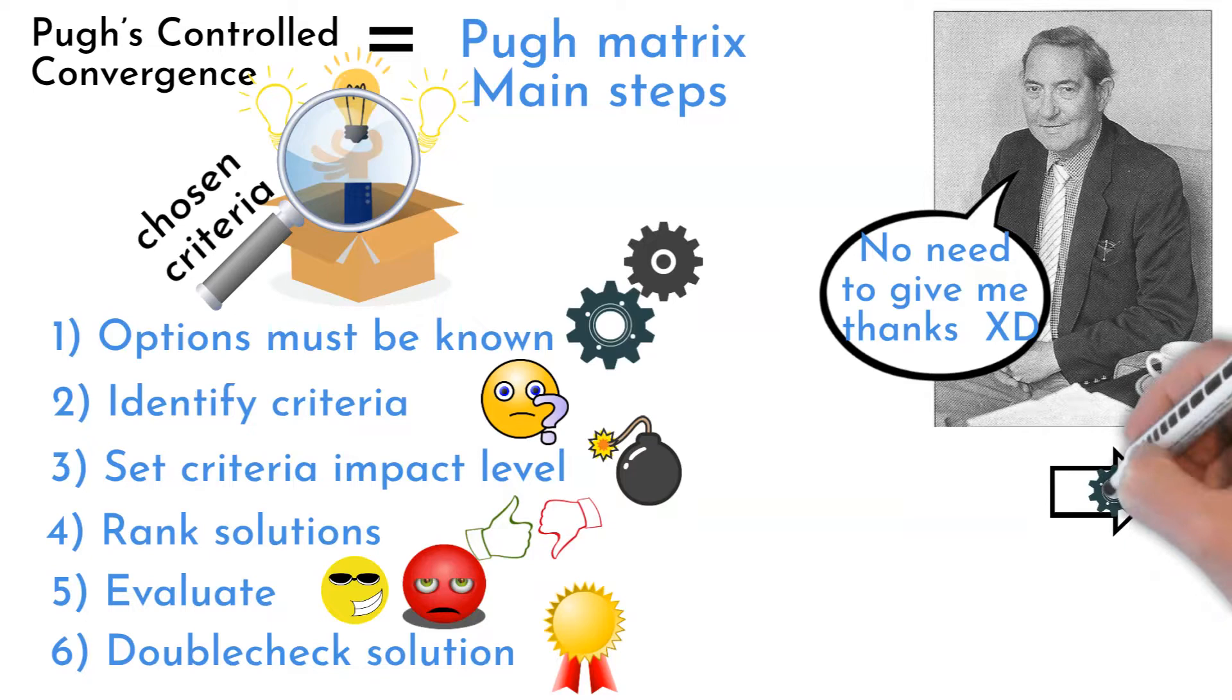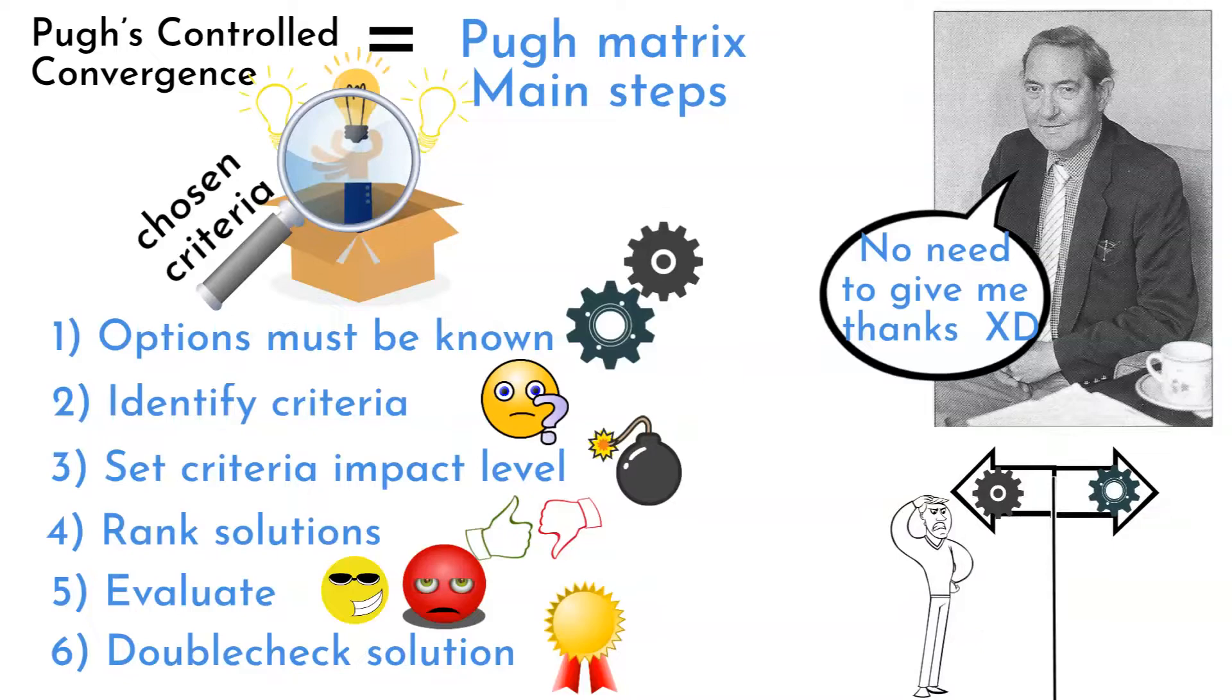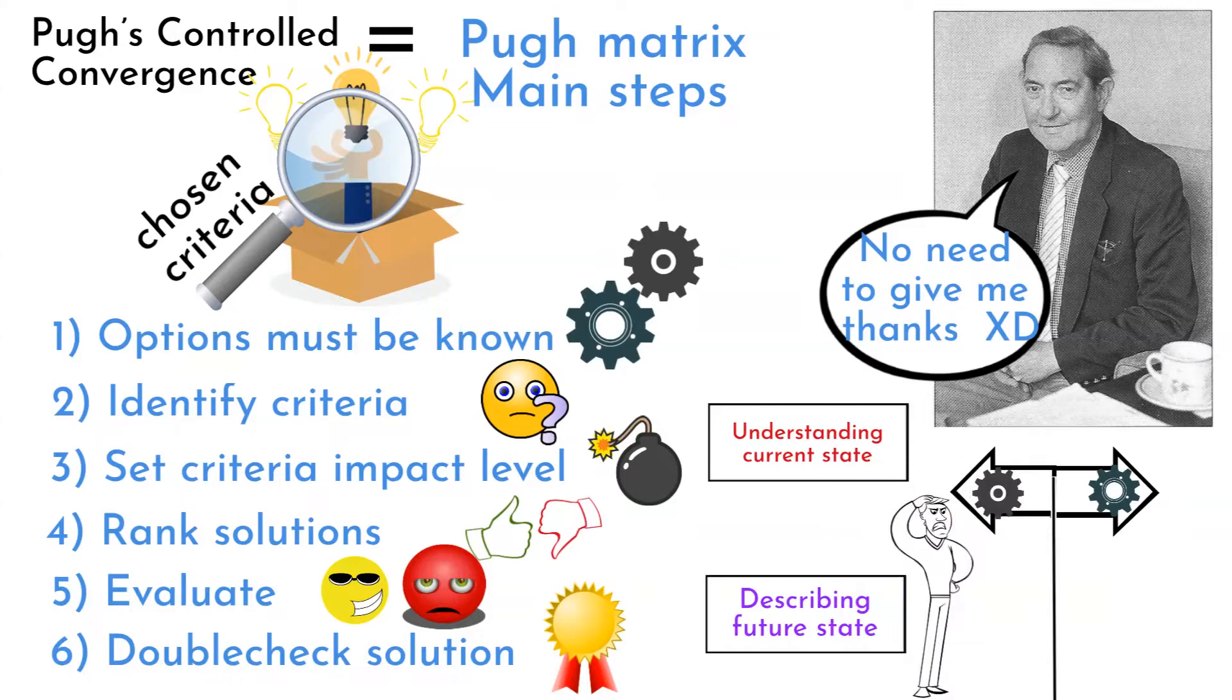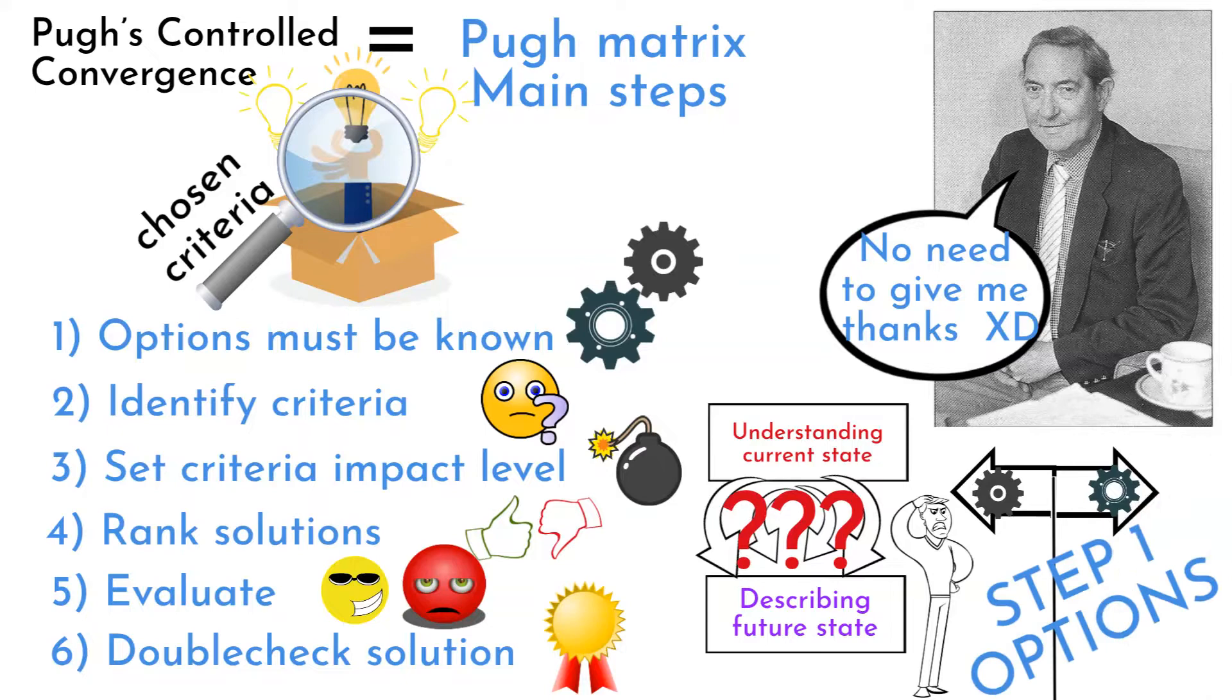Let's say there are several identified options project team must choose from. These solutions were identified with project progress by understanding current state and by describing how future state ideally should look like. But there are several solution options to choose from. It is not easy to say which one is the best.